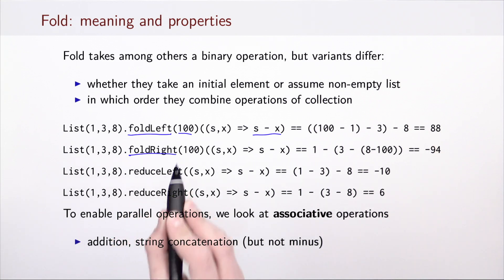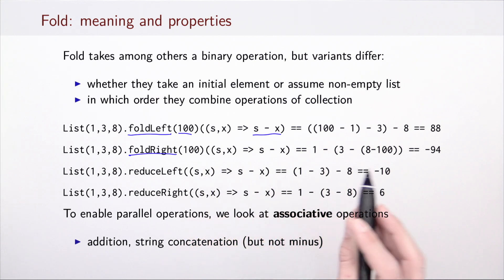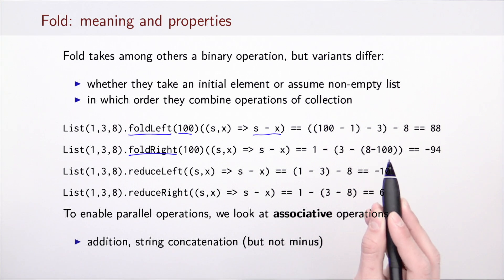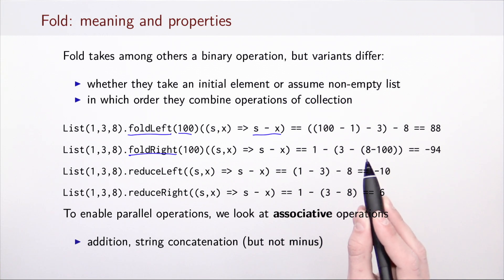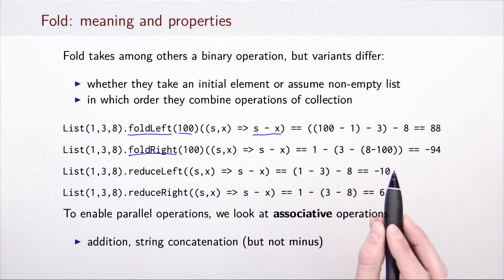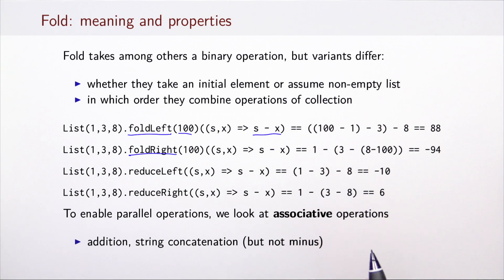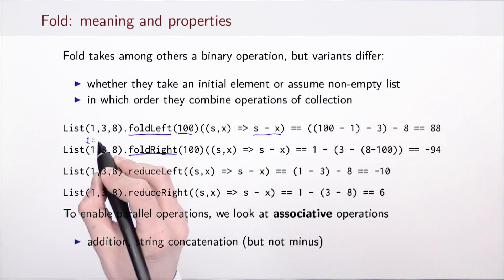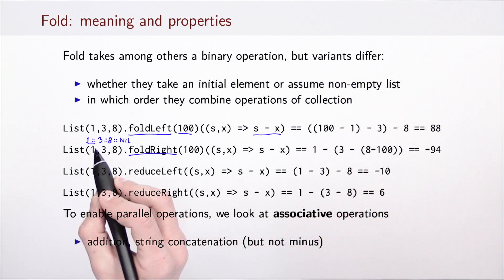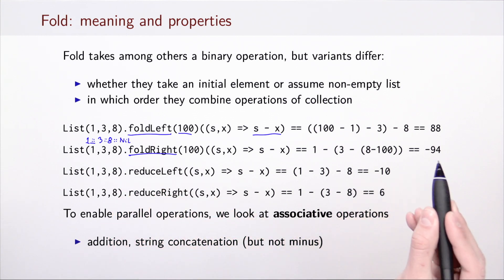In contrast, fold right also takes an initial element, but combines values starting from the end of the list. You can think of 100 as replacing the empty list at the very end. So the first thing computed is 8 minus 100, then 3 minus that result, and so on. You can think of the original list as 1, 3, 8, and then 0, where the constructor is replaced with minus and nil with the given element. The result in this case is minus 94.